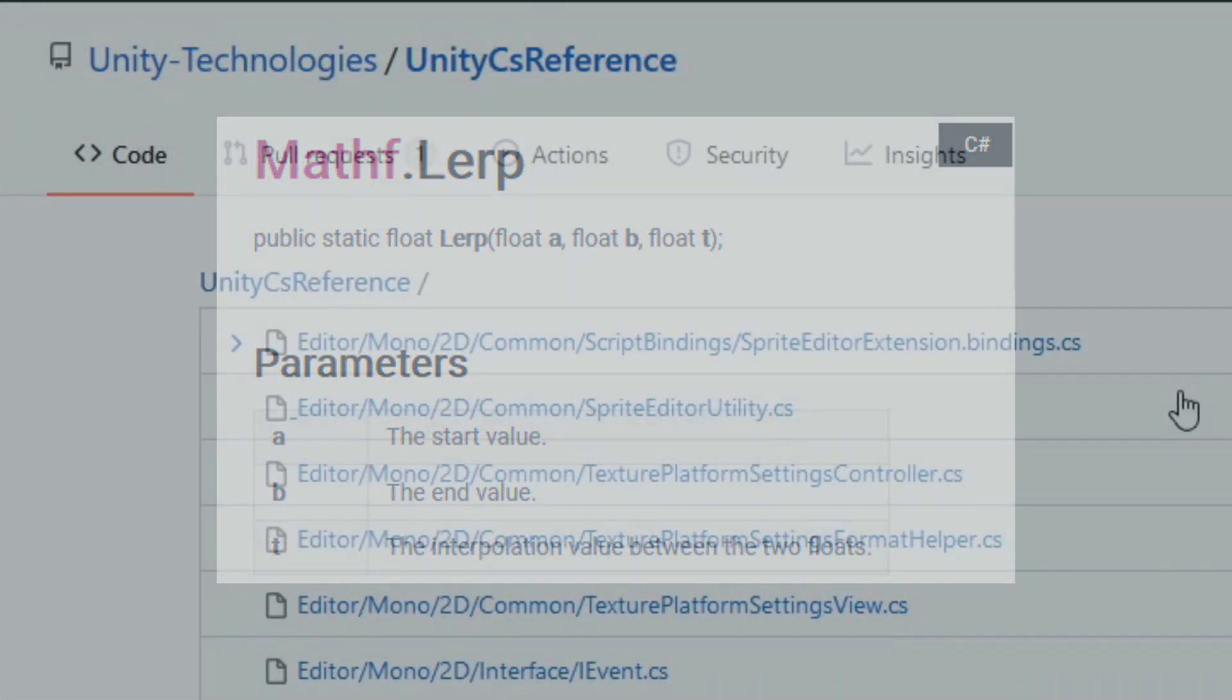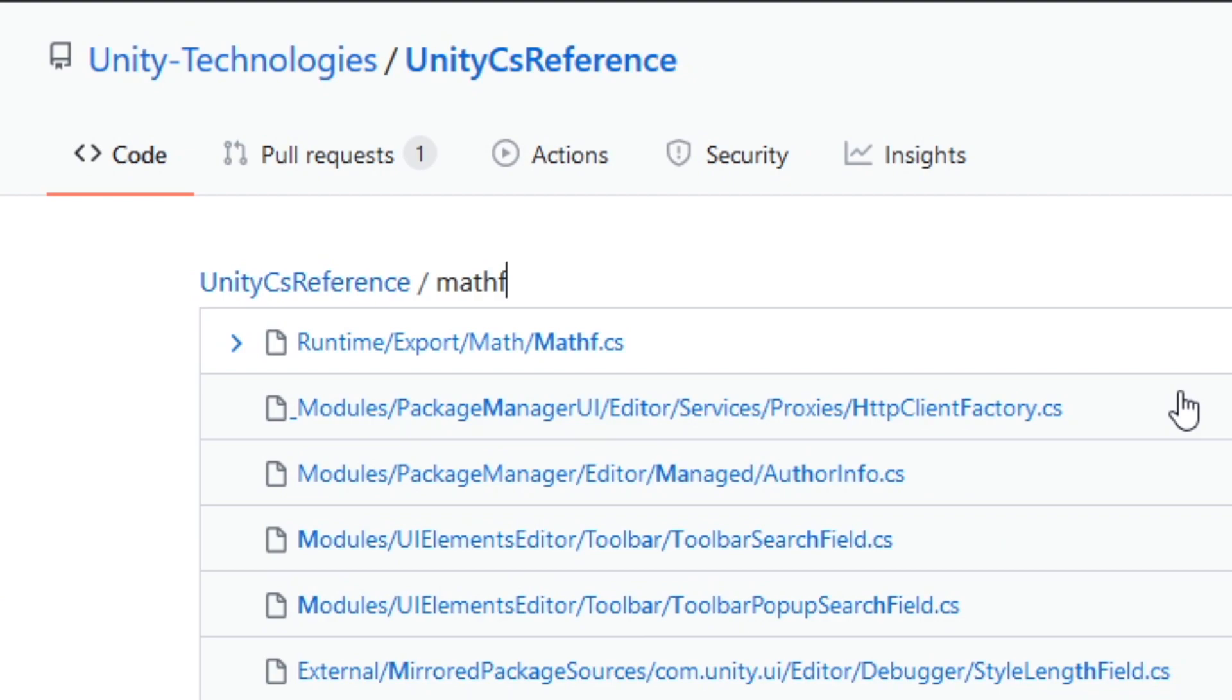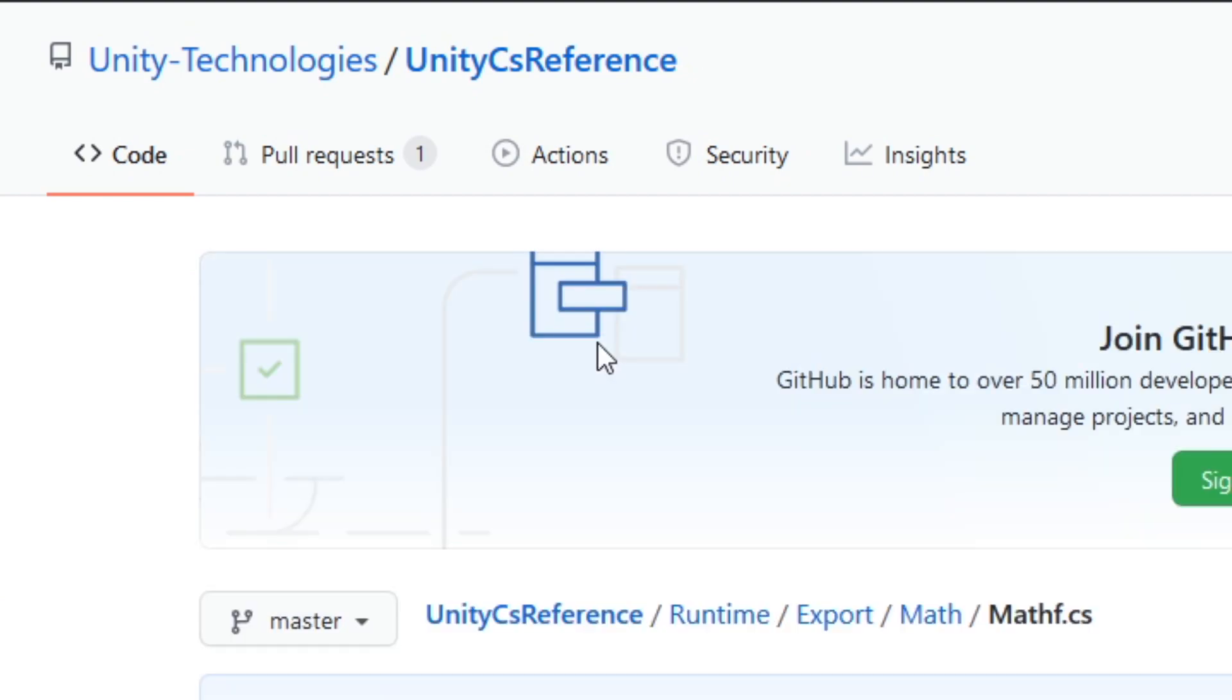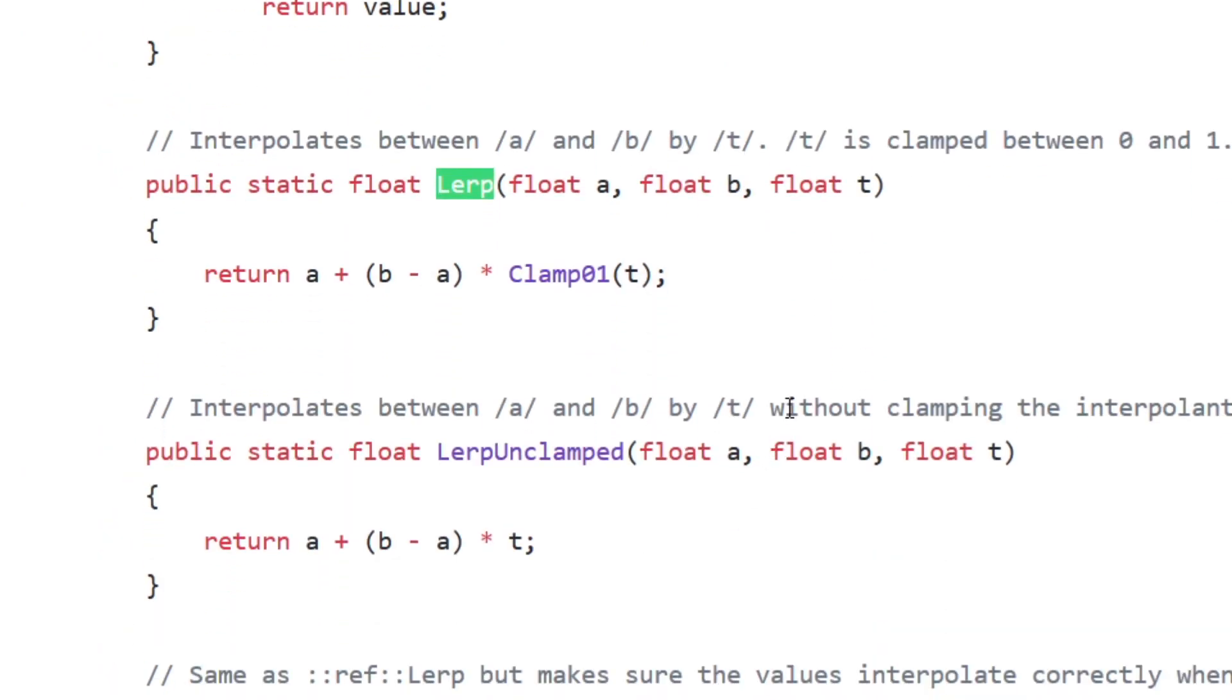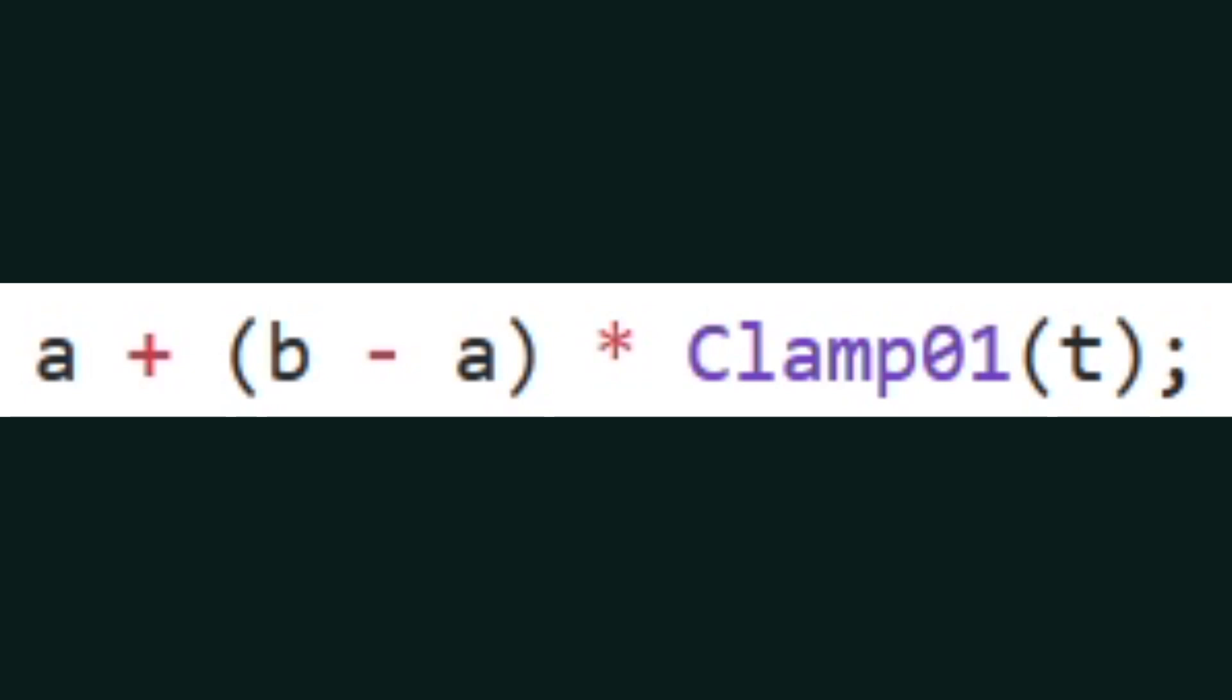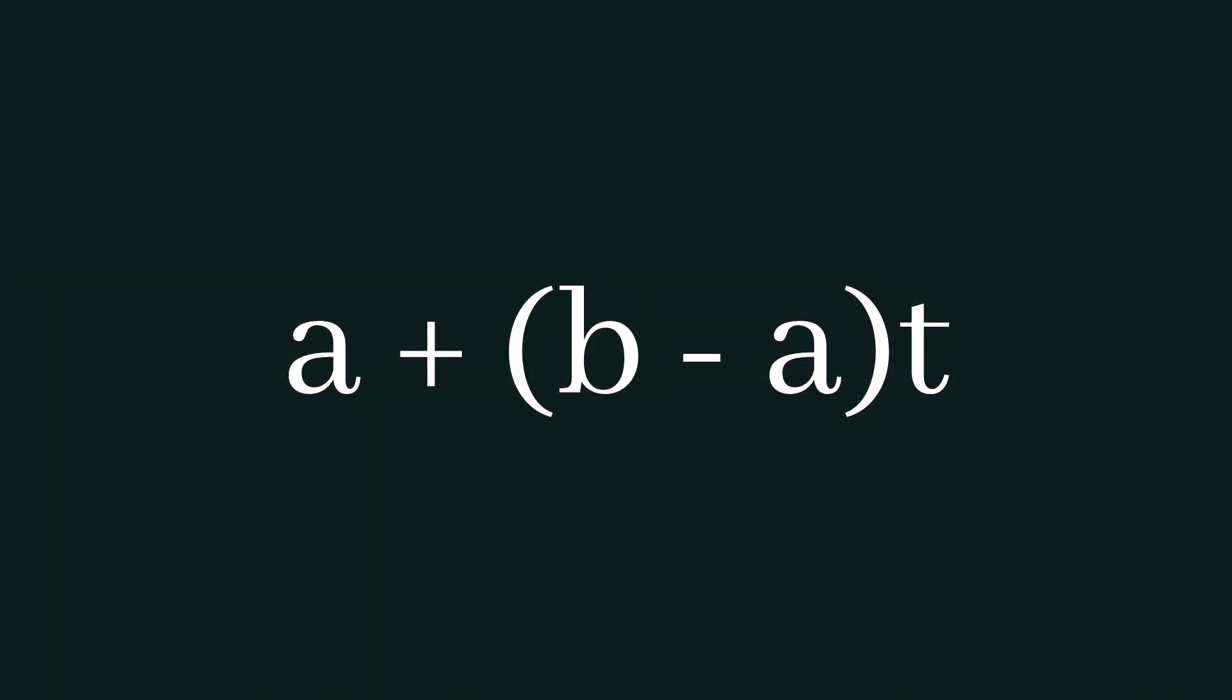In the Unity CS reference GitHub repository, if we navigate to the mathf source file, we can locate the implementation of mathf.lerp. As we can see, it returns the expression a plus b subtract a, multiplied by t, clamped between 0 and 1. For the sake of simplicity, let's pretend that t isn't clamped, and we can then pull this out onto the screen as a fairly simple expression.